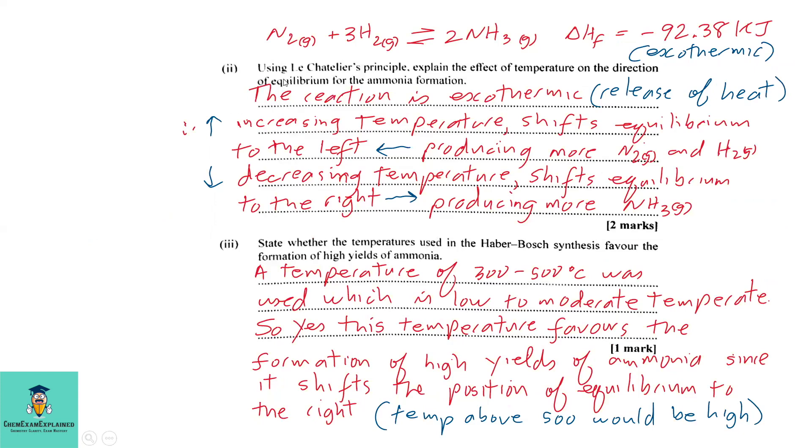Part 2: Using Le Chatelier's principle, explain the effect of temperature on the direction of equilibrium for the ammonia formation. Again, remember that once it is negative, it is exothermic, which means that heat is a product. If the enthalpy of the reaction was positive, it would be endothermic, then heat would be a reactant. But in this case, it is exothermic. Heat is a product.